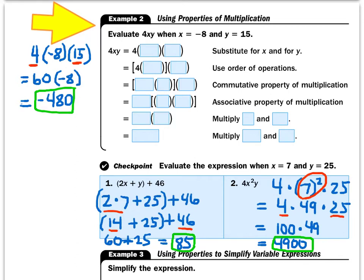For number 2, substitute the values in: 4 times 7 to the second power times 25. Order of operations says do the exponents first, so 7 squared is 49. Now we have 4 times 49 times 25. It's much easier to multiply 4 times 25 first — that gives us 100 — and then 100 times 49 gives us 4,900.